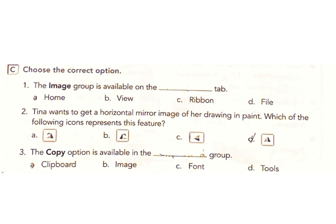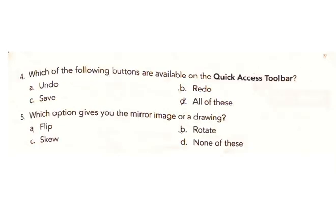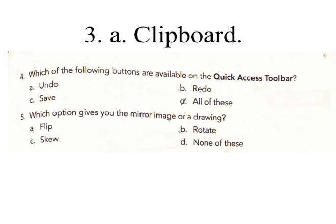3. The copy option is available in the group: a) Clipboard, b) Image, c) Font, d) Tools. Answer: a) Clipboard. 4. Which of the following buttons are available on the Quick Access Toolbar: a) Undo, b) Redo, c) Save, d) All of these. Answer: d) All of these.